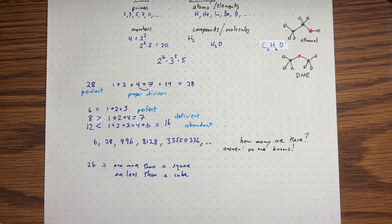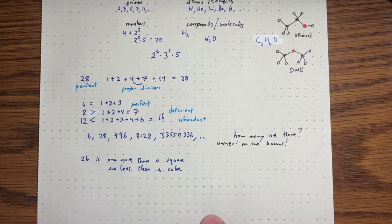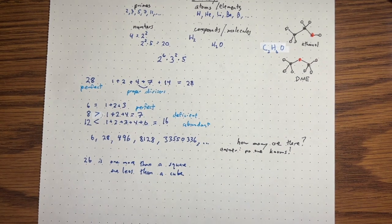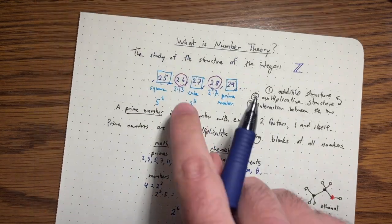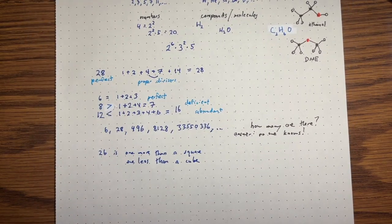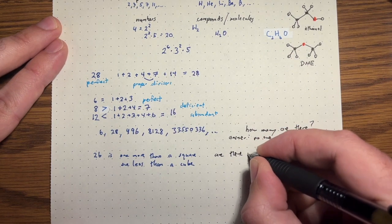Well, what's the next natural question to ask, right? Is this a very special thing, right? Like perfect numbers or does this happen all the time, right? Maybe there are infinitely many numbers that are sort of sandwiched between a square and a cube. So yeah, let's go. Are there more numbers like 26? Are there more numbers like this?